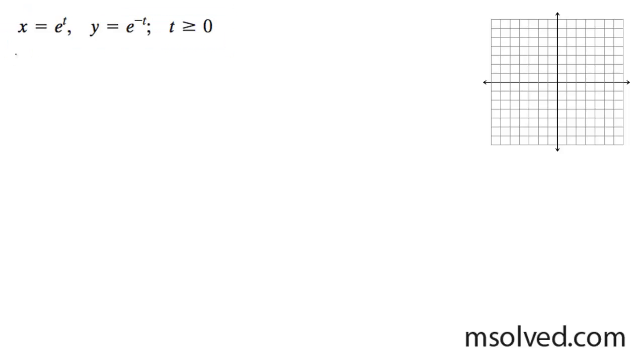We have two parametric equations here. Starting off, we want to get an initial graph going based off of t greater than or equal to 0, and we want to find the rectangular equivalent.